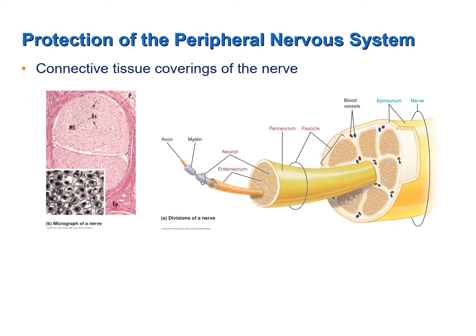Here is the figure from your book illustrating the nerve. Here is an individual axon with a myelin sheath around it. That myelinated axon is then surrounded by an endoneurium. Those axons with their individual endoneuriums are then bundled together and surrounded by a perineurium forming a fascicle. And then several fascicles are bundled together and surrounded by an epineurium completing the nerve.